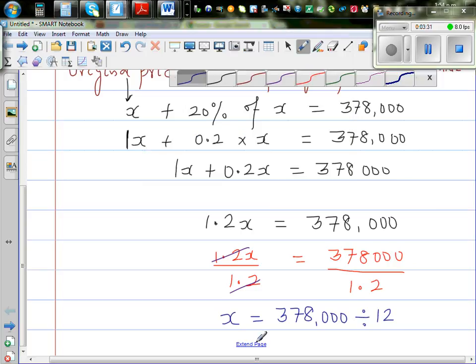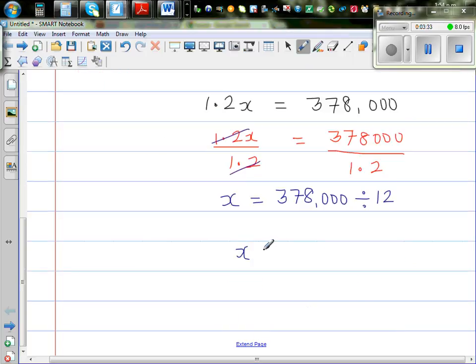So X is $315,000. Let us confirm the answer. So we can say, therefore, the original price of the house is $315,000.